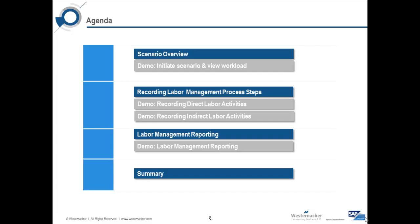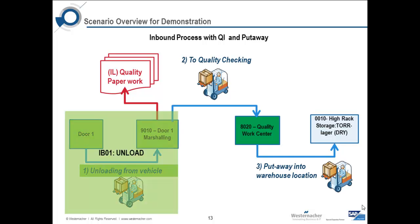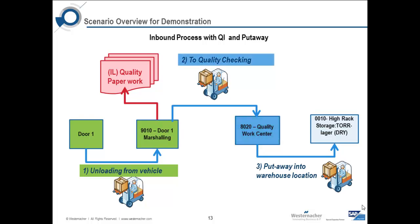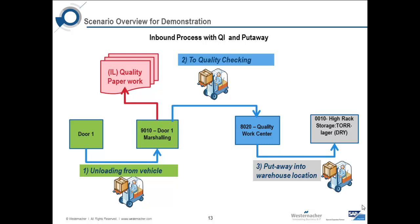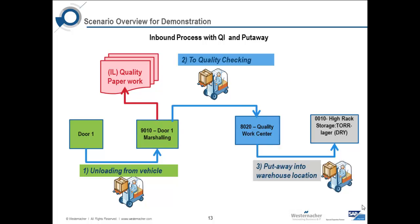Now back to our agenda. We have captured direct and indirect labour durations. In section 3 let's review the reports that are available from this data. Before we view reporting, let's review our process flow. We have confirmed our warehouse task from the door to the marshalling area, creating an executed workload for unloading. We have also registered our indirect labour task, creating an executed workload for quality documentation. In the background I have also confirmed our warehouse task to the quality centre, creating a workload for the quality step, and confirmed the final put away into the warehouse, creating another workload for the put away step.